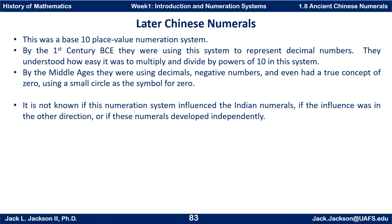This was really a base-ten place value numeration system. By the first century BCE, they were using this system to represent even decimal numbers as well as whole numbers. They understood how easy it was to multiply and divide by powers of ten — you just move everything over one place each time. By the Middle Ages, they were using decimals, negative numbers, and had a true concept of zero using the small circle.